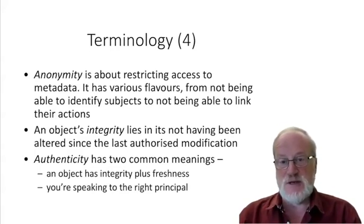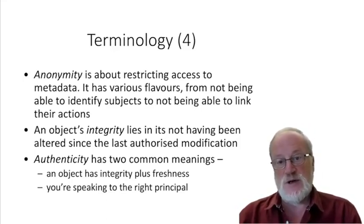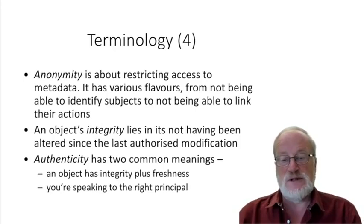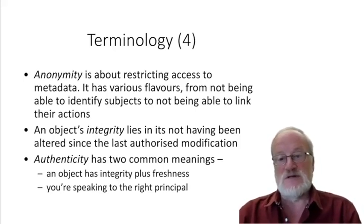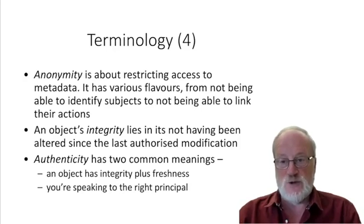Anonymity is about restricting access to metadata. It has various flavors: not being able to identify subjects, posting on Twitter using a pseudonym, having assets on a Bitcoin blockchain identified only by a public key rather than your name, or not being able to link actions — such as having separate records for different prescriptions rather than one linked medical history, which is very difficult to anonymize.